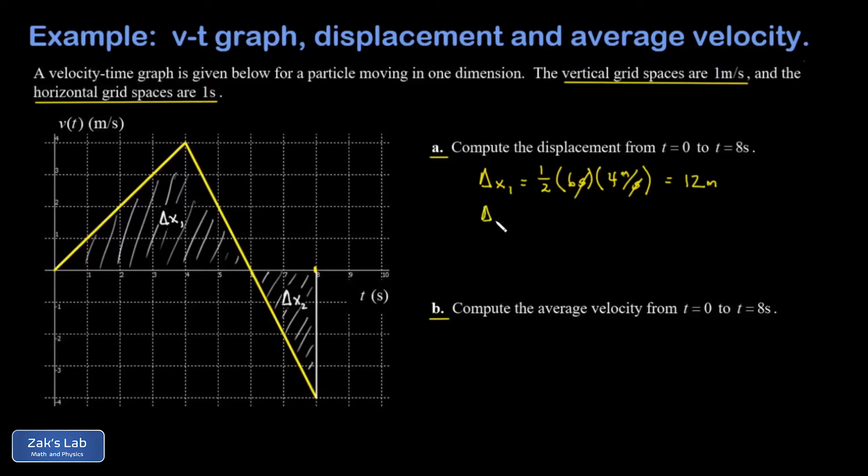For delta x2, the base is two seconds and here we can keep the minus sign on the height as a way of seeing why I get a negative contribution to displacement. My height is negative four meters per second. Our twos cancel, our seconds cancel, and I get negative four meters. So my net displacement is just 12 minus 4, it's eight meters in the positive direction.